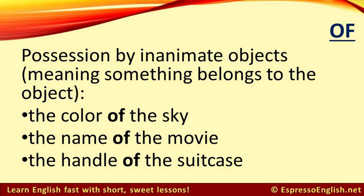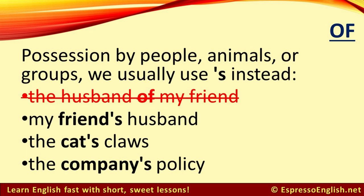We often use of when talking about possession by inanimate objects, meaning something belongs to the object. For example: the color of the sky, the name of the movie, the handle of the suitcase. When talking about possession by people, animals, or groups, we usually use apostrophe-S instead. So instead of saying the husband of my friend, we typically say my friend's husband, the cat's claws, and the company's policy.